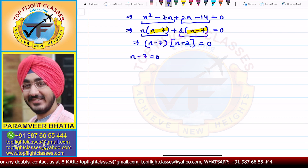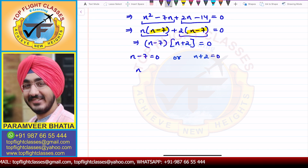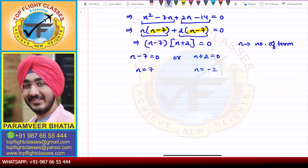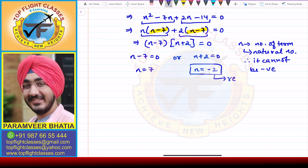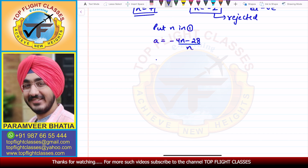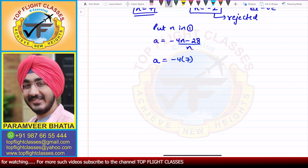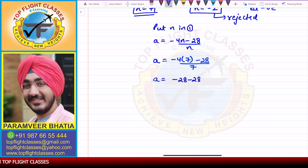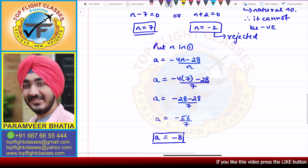So we have N minus 7 equals 0 and N plus 2 equals 0, giving N equals 7 and N equals minus 2. Since N is the number of terms, it is always a natural number and cannot be negative. Therefore, N equals minus 2 is rejected, and N equals 7 is the actual value. Substituting into the first equation: A equals minus 4 times 7 minus 28 by 7, which gives minus 28 minus 28 by 7, equals minus 56 by 7. So A equals minus 8. These are the two values required by the question.